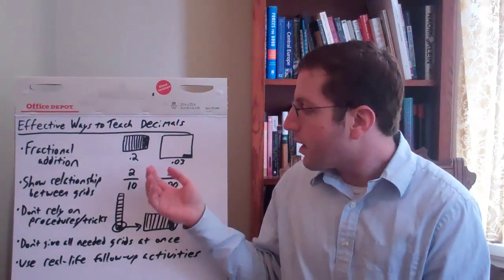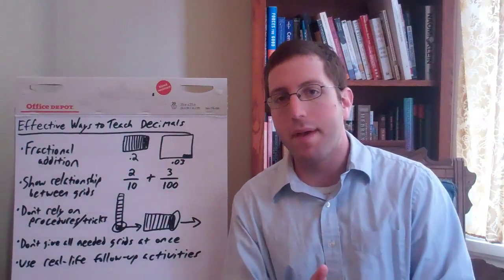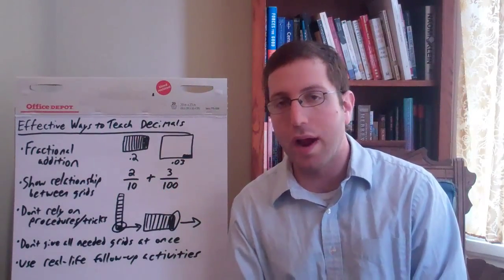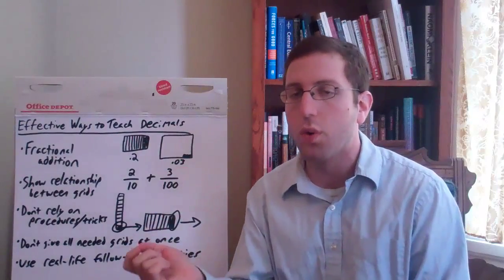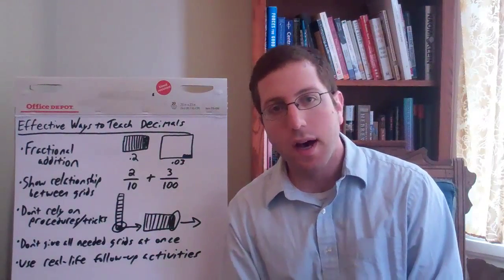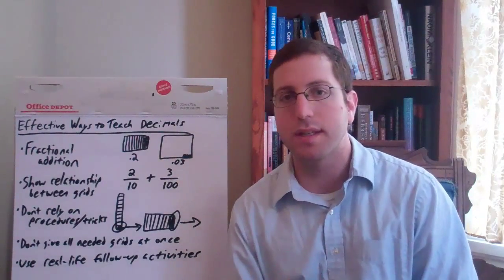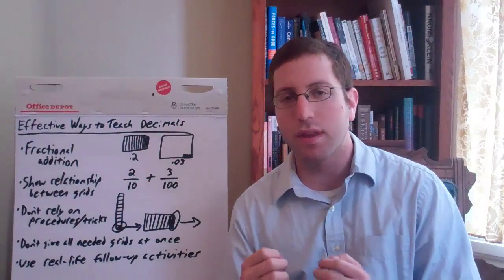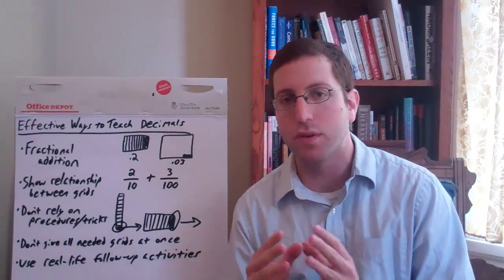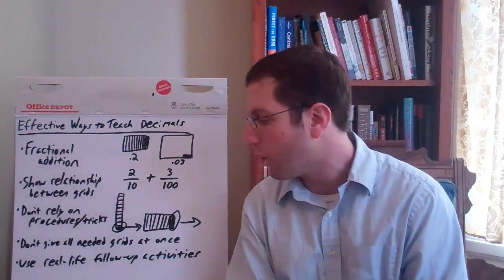So they'll suggest instead, give students just the tenths grid and have them ask for the hundredths grid, or have them draw it and show why they would want the hundredths grid, why they need it. By doing that, you're forcing students into this place of really wrestling with how place value works, how decimals work, how each place value continues to subdivide more and more.